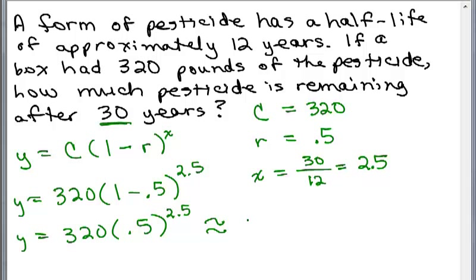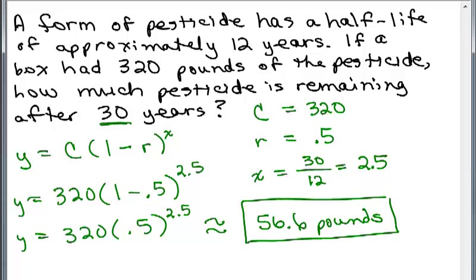So to the nearest tenth of a pound, this is 56.6 pounds. So we would still have that many pounds of pesticide after 30 years. What might be interesting is for you to figure out how much is after 100 years. There's always just a little bit left in there.